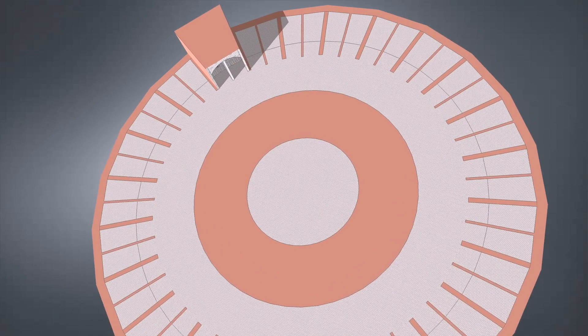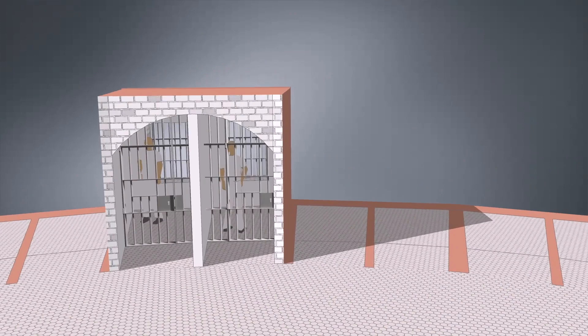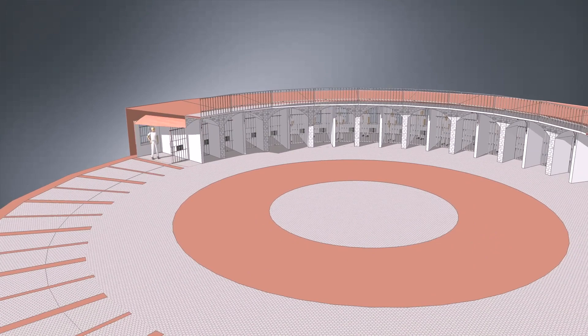A circle of diameter of 100 feet. Around the perimeter of this circle stretch cells. Each cell is 9 feet deep and 48 per floor.